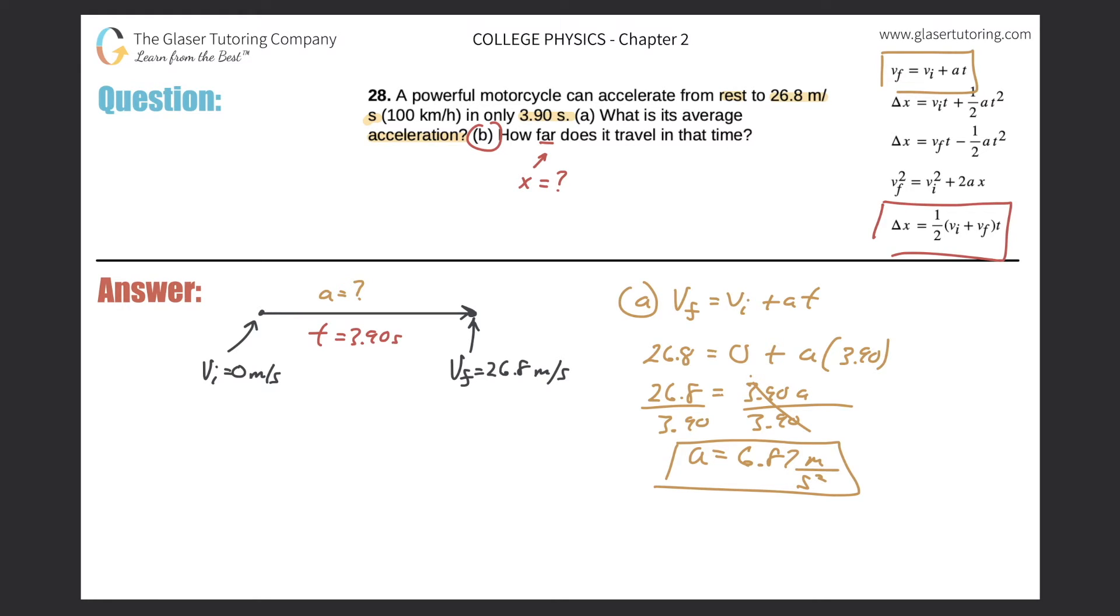number five, right, essentially has all the pieces I need. So now this is part B. Let's rewrite the formula. So we've got the change in displacement is equal to one half times the initial velocity plus the final velocity multiplied by time.